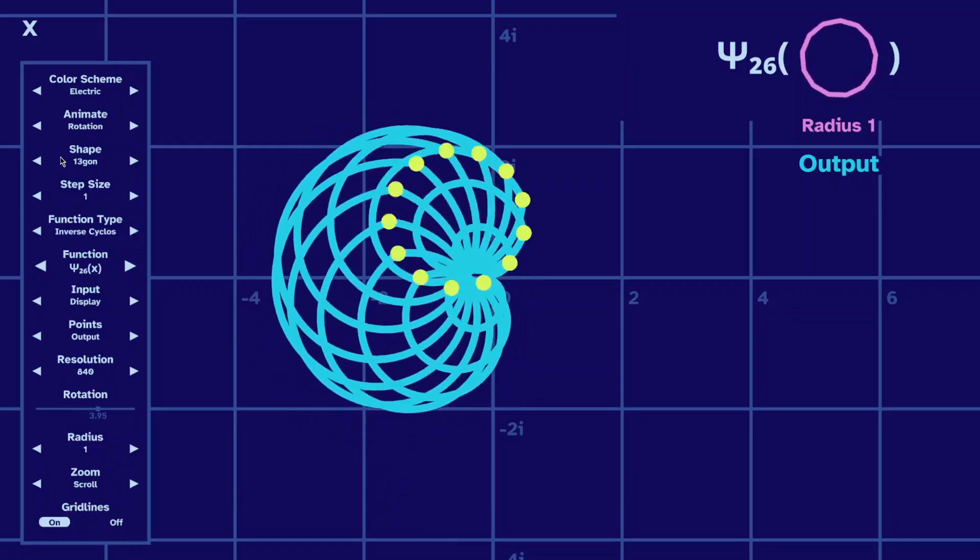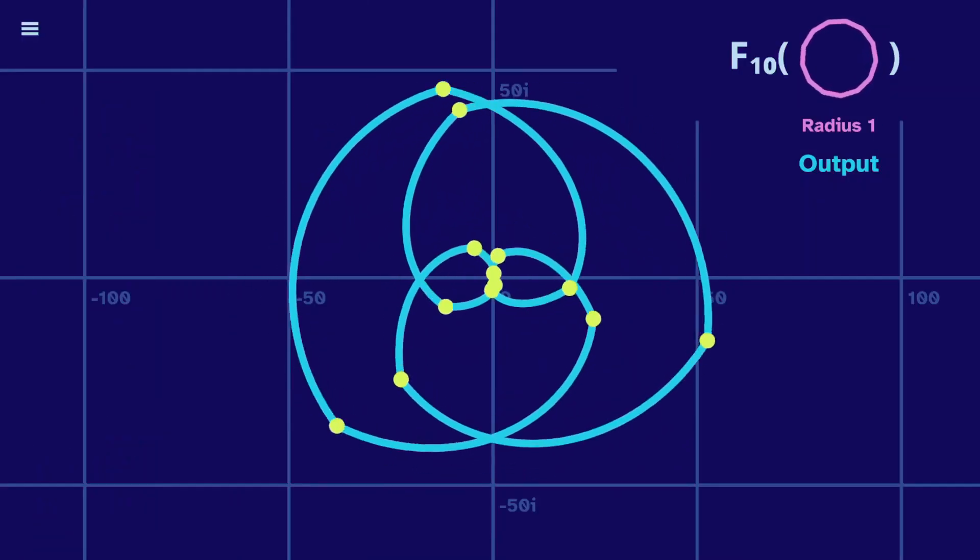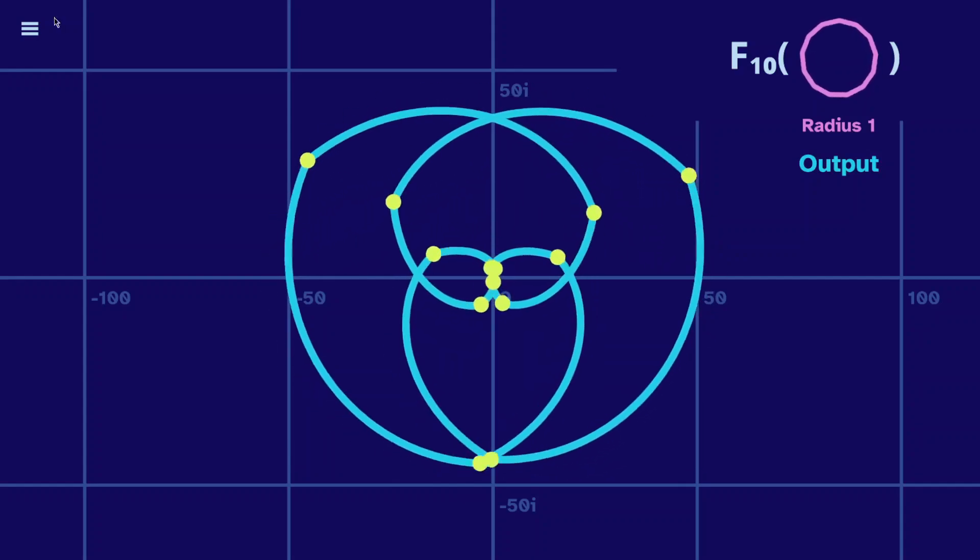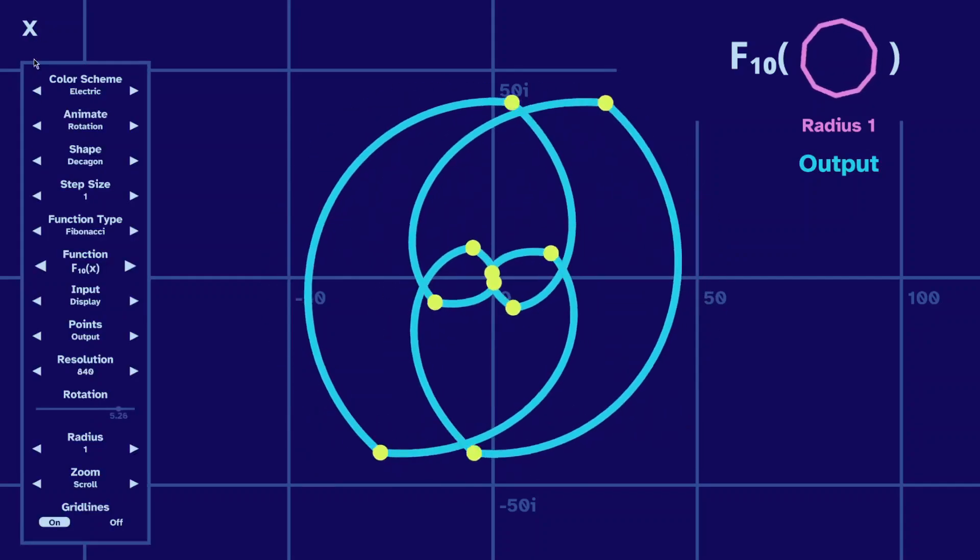Let's input this 13-gon to a Fibonacci polynomial. And this is the 10th Fibonacci polynomial, so maybe we should also input a decagon.